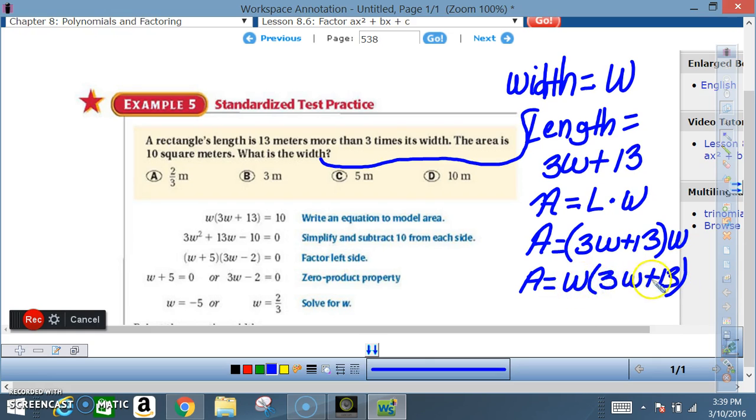in front followed by what's in the parentheses. And from there we go from here to where they are in the actual problem. So now we have the actual problem: w times (3w plus 13) equals 10.